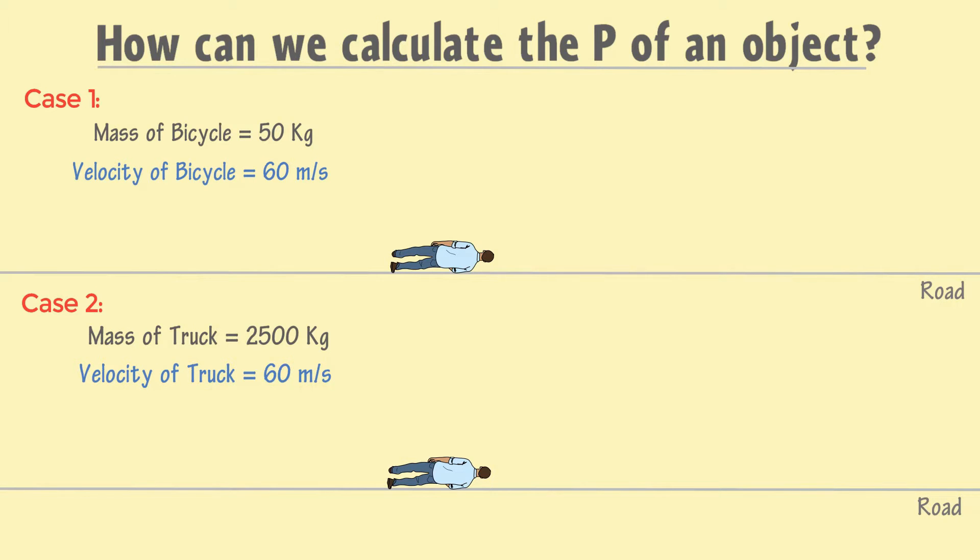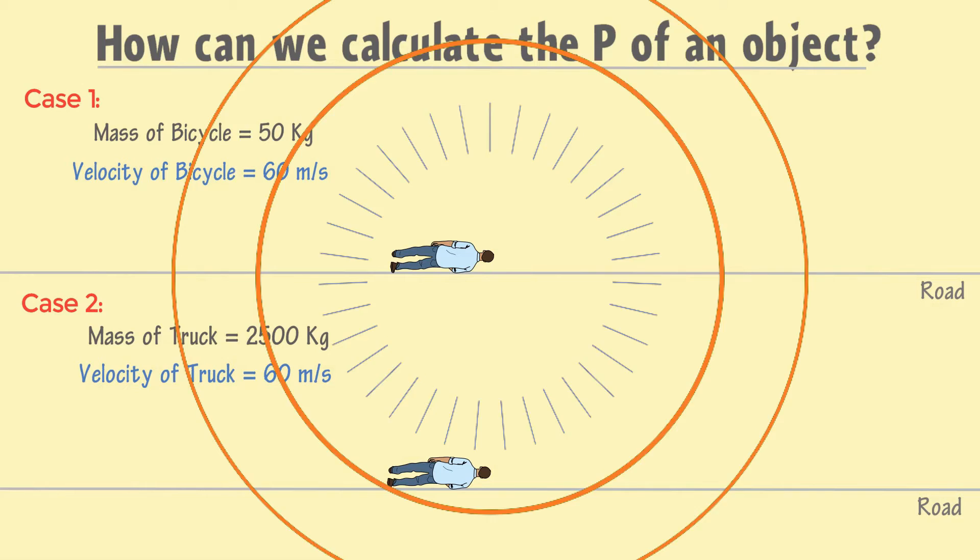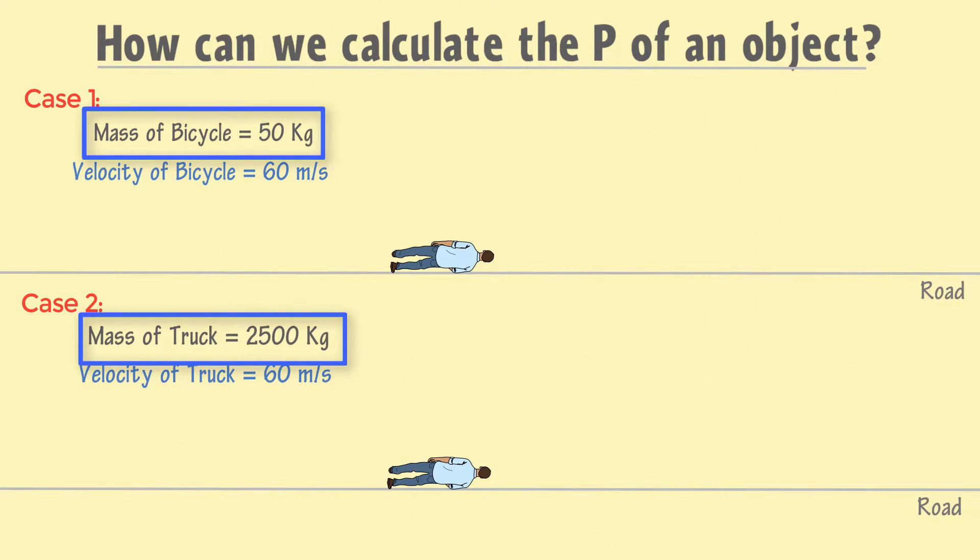Although both the bicycle and truck were moving with the same velocity of 60 meters per second, I hope that your answer would be the difference in masses. If it is so, then you are 100% right.